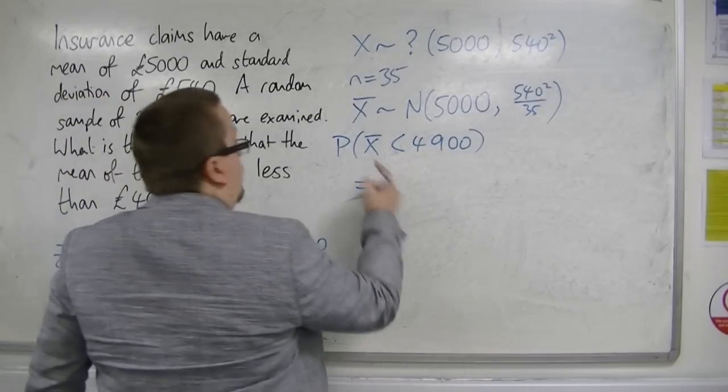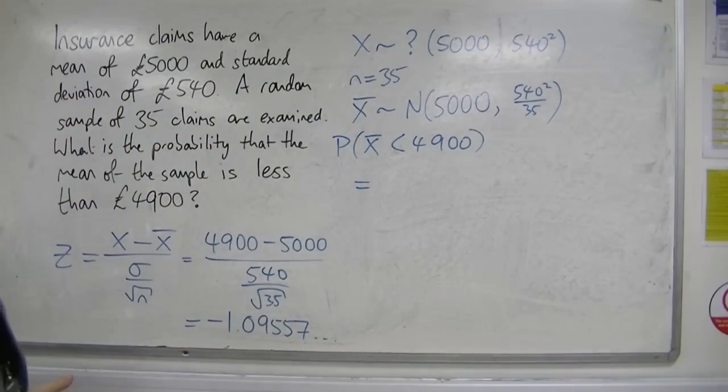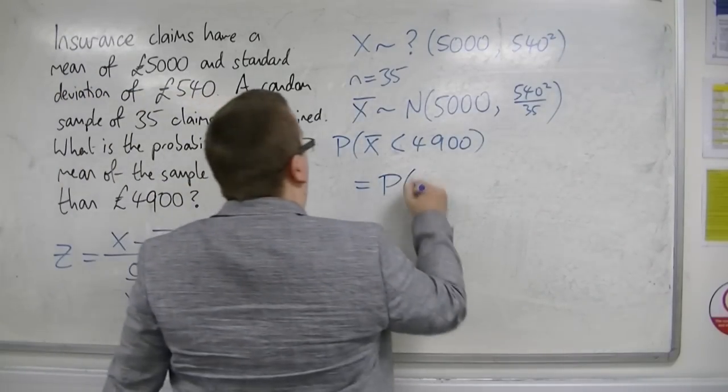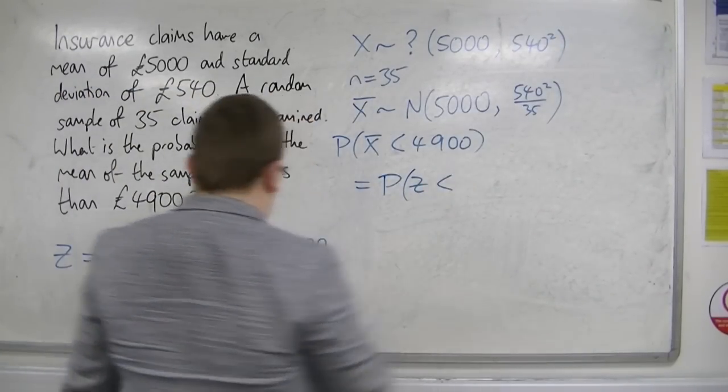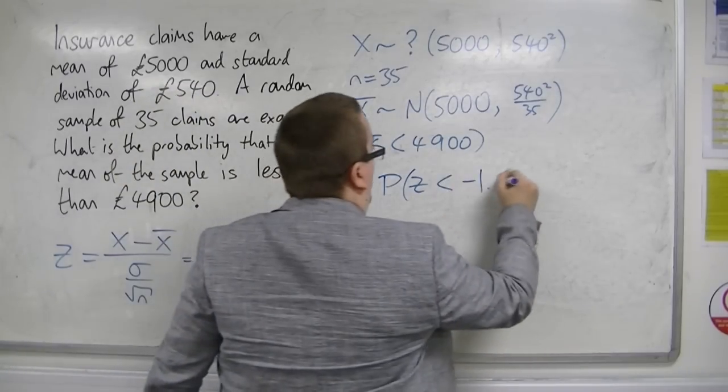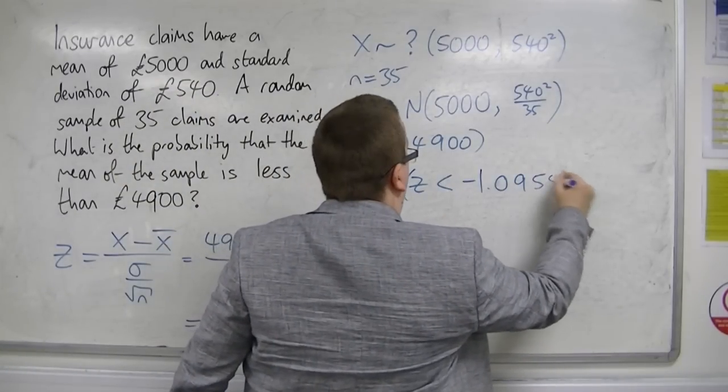So the probability that x-bar is less than 4,900 is the same as the probability that z is less than minus 1.09557.